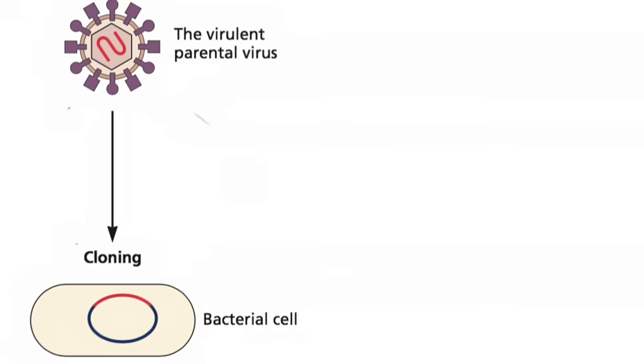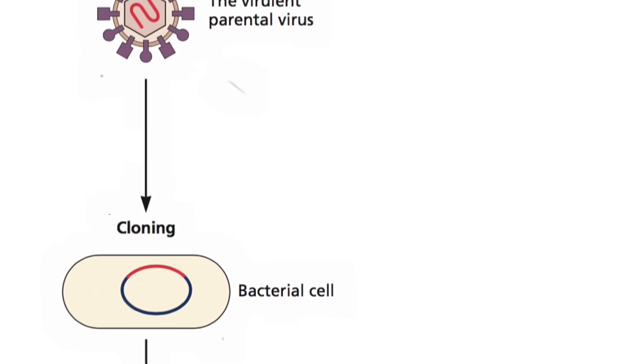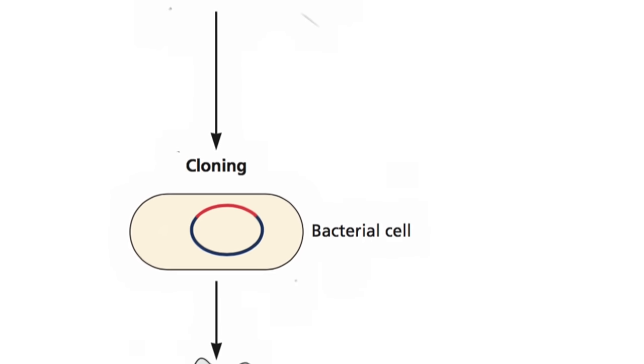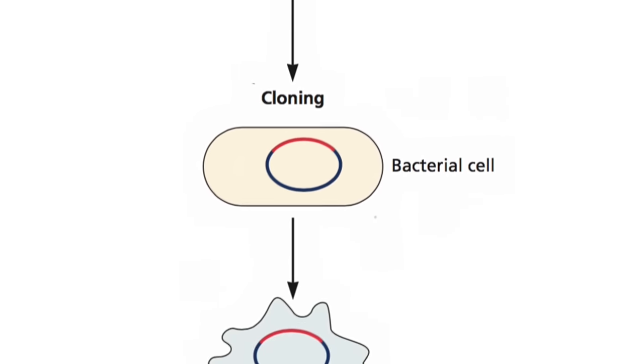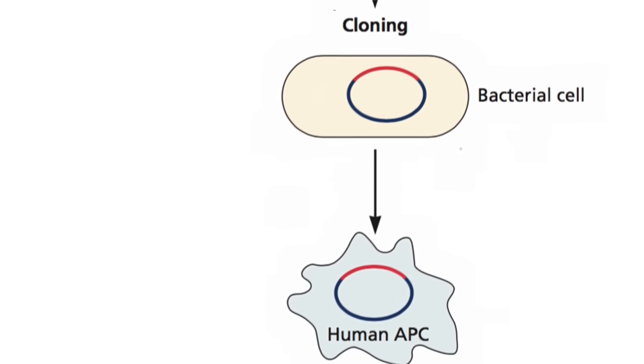One of the candidate Zika virus vaccines is different from all of these because it consists of naked DNA. It's called a DNA vaccine. This type of vaccine consists simply of the vector that encodes the viral gene that can be expressed in cells of the animal that's going to be immunized. In the simplest case, the vector encodes only the viral protein.